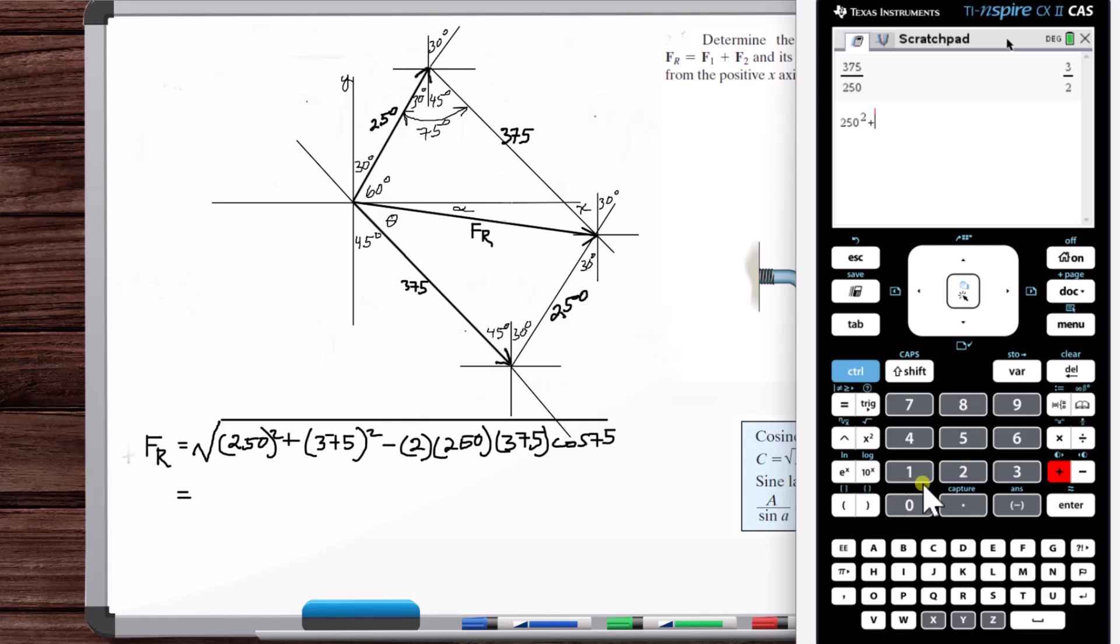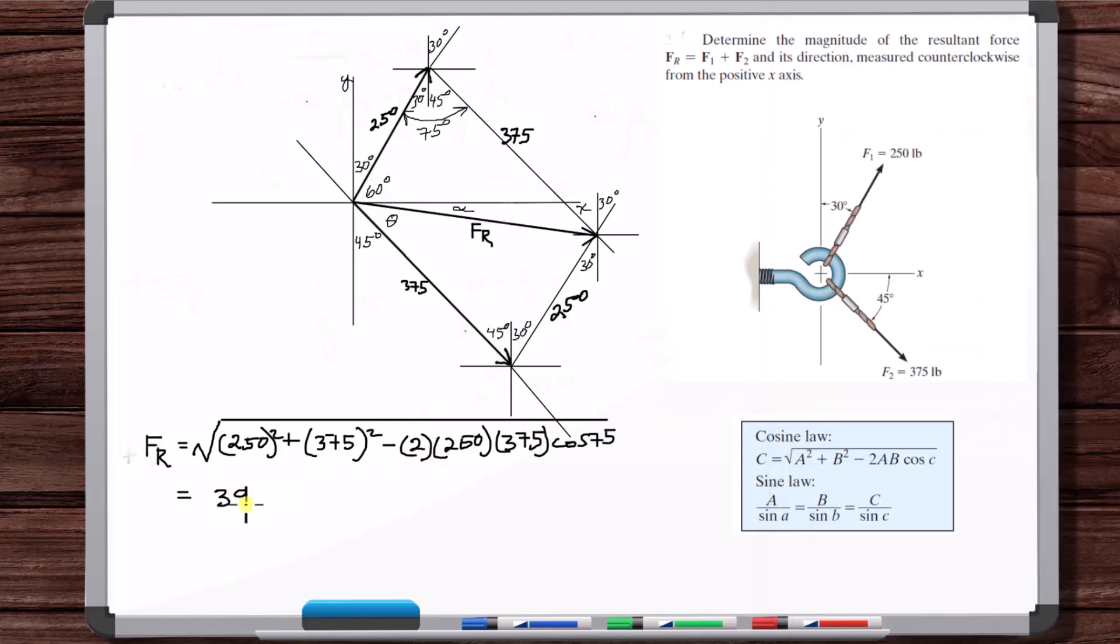250 squared plus 375 squared minus 2 times 250 times 375 times cosines of 75. Now, take the square root of that. 393.2. That's FR.